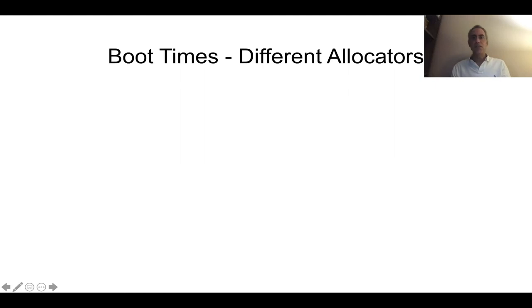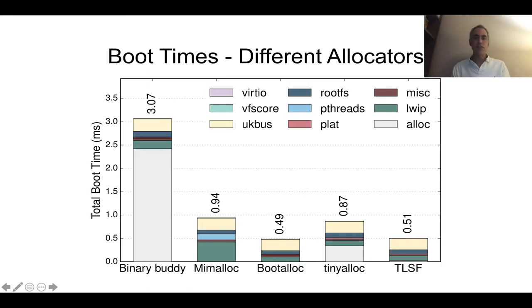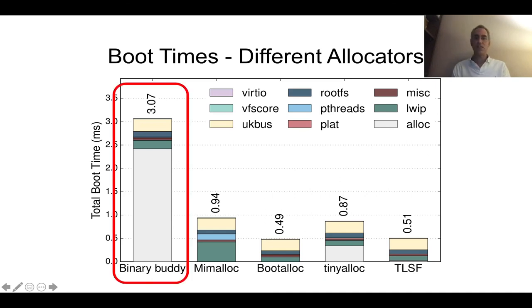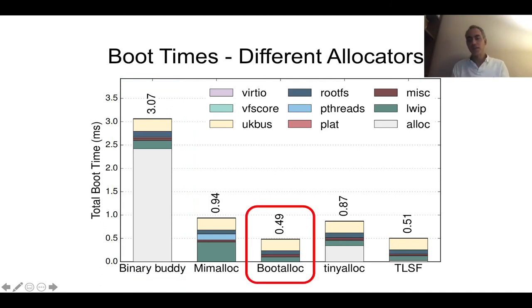Boot times with different allocators: one of the things you can specialize for in Unicraft is different memory allocators. We support five different ones, and there's an API that allows you to add more. The actual boot time varies with the memory allocator. The standard one called buddy allocator takes about three milliseconds. But we even built a custom boot allocator that is really simple — it's just meant to go fast — and if you do that, you can boot in less than a millisecond.